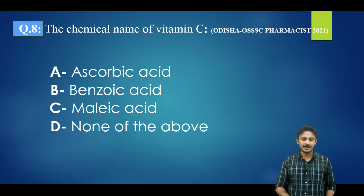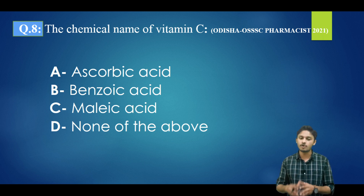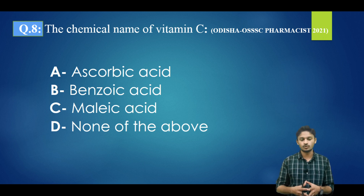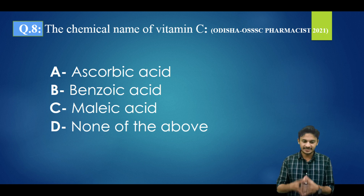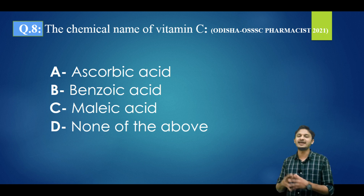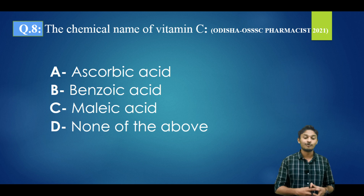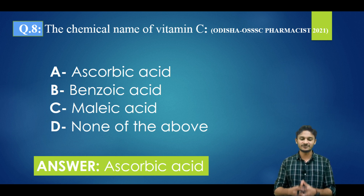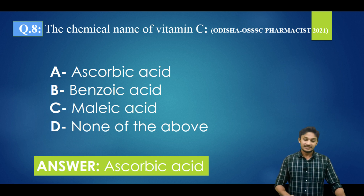Question number eight: what is the chemical name of vitamin C? Options are: ascorbic acid, benzoic acid, malic acid, none of the above. Vitamin C is also known as ascorbic acid — option A is the correct answer. This is a simple question.